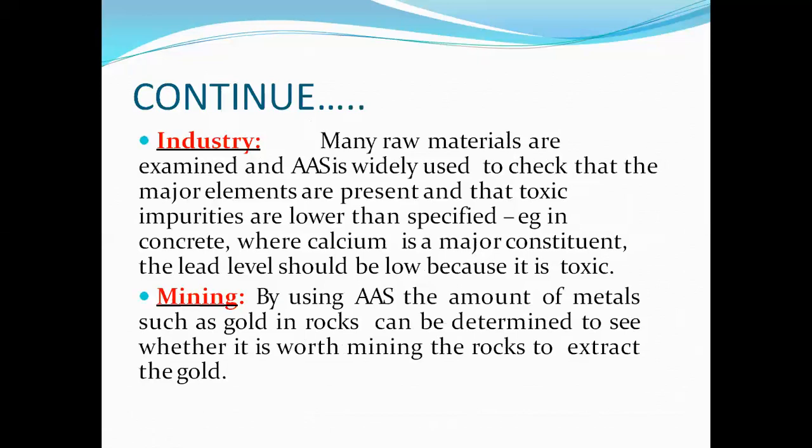In different industries, many raw materials are examined and AAS is widely used to check that the major elements are present and that toxic impurities are lower than specified. For example, in concrete where calcium is a major constituent, the lead level should be low because it is toxic. AAS is widely used in the determination of toxic impurities in different materials.